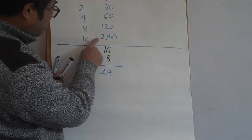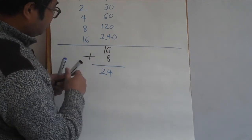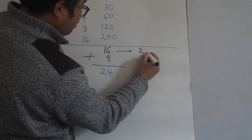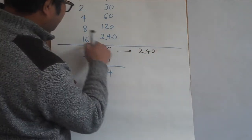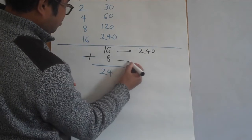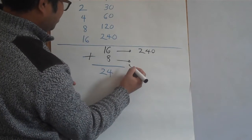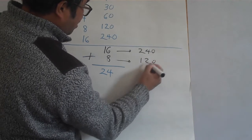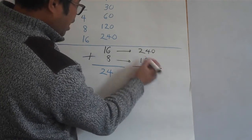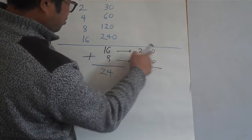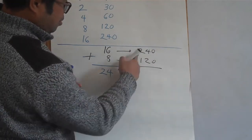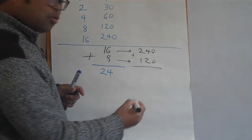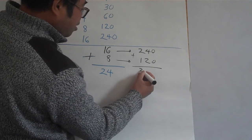What's the number next to sixteen? Two hundred and forty. What's the number next to eight? One hundred and twenty. We add those — what do you get? Three hundred and sixty.